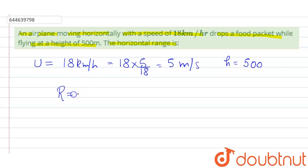The formula for range is u under root 2h upon g. Now substituting the value: u is 5, h is 500, and g is 10. So on solving we get